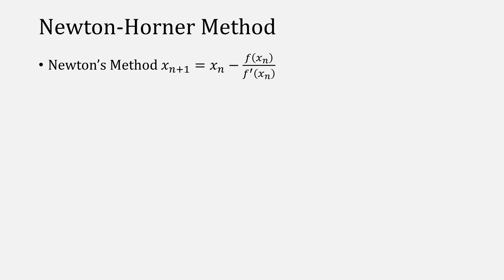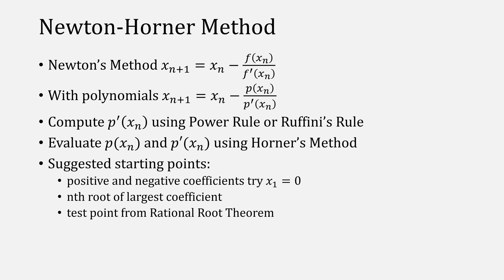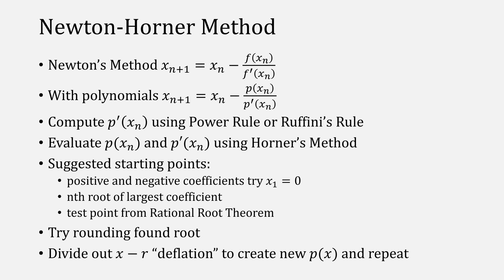Let's instead use Newton's method, but apply it to polynomials. If you haven't seen my video on Newton's method, I recommend you watch it now. Since we're using Newton's method, we'll need the derivative, which you can find using either the power rule or Ruffini's rule. And whenever we evaluate a polynomial, you'll want to use Horner's method. As for starting points, if you have a nice mixture of positive and negative coefficients, this means your roots are either all negative or positive and negative, so you can start at zero as a good test point. Otherwise, you might try using the nth root of the largest coefficient, or use one of the points from the rational root theorem. Whatever the case, once you do find an answer from Newton's method, try rounding it with the polynomial to see if that gives you a better result. Then once you've found a good enough root, deflate the polynomial using Ruffini's rule and restart the process.